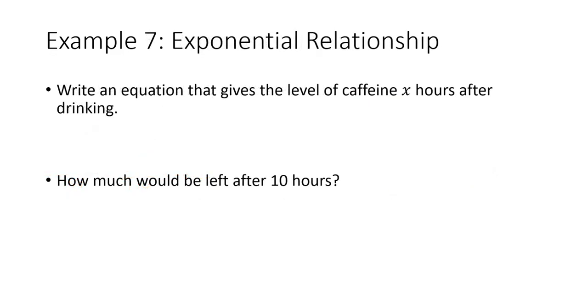If we want to write an equation that gives us the level of caffeine, well, the level of caffeine is going to be equal to, we start it off with 180 milligrams, and then we're going to multiply by 0.8 for each hour afterwards. And so to find out how much of the caffeine would be left after 10 hours, that's 180 times 0.8 to the 10th power. If we plug this into our calculator, 19.33 milligrams of caffeine remaining after 10 hours.